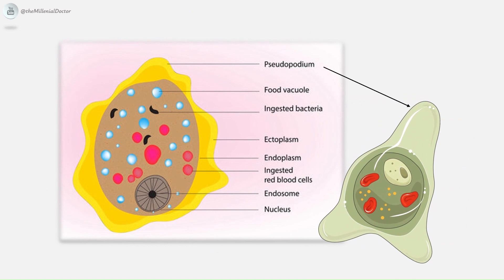The trophozoite is made up of the following structures. The outer cytoplasm is clear, transparent, and refractile. The inner endoplasm is finely granular, having a ground-glass appearance. The endoplasm contains the nucleus, food vacuoles, erythrocytes (RBCs) occasionally, and tissue debris.